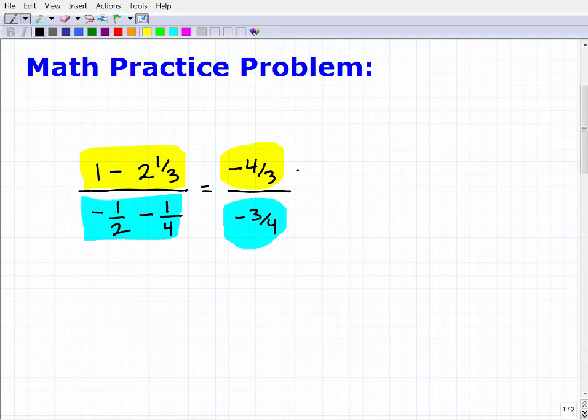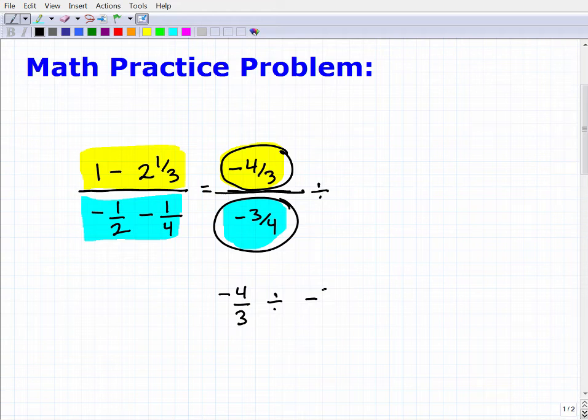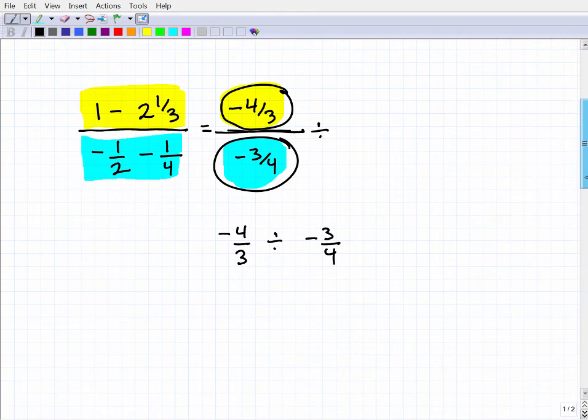Let's talk about how we deal with this complex situation. A complex fraction is where we're dividing one fraction by another. So what this problem states at this moment is this divided by this. Negative 4 thirds divided by negative 3 fourths. So let's write this this way. Negative 4 thirds divided by negative 3 fourths. So let's just double check our work. We have negative 4 thirds divided by negative 3 fourths, and now we can move to finish this problem.